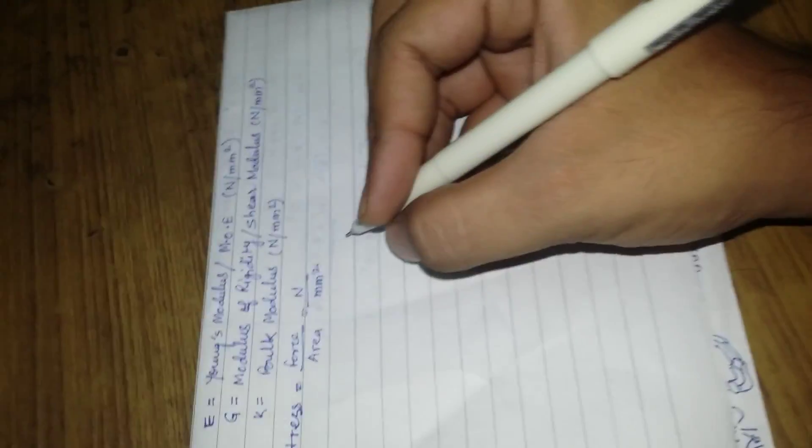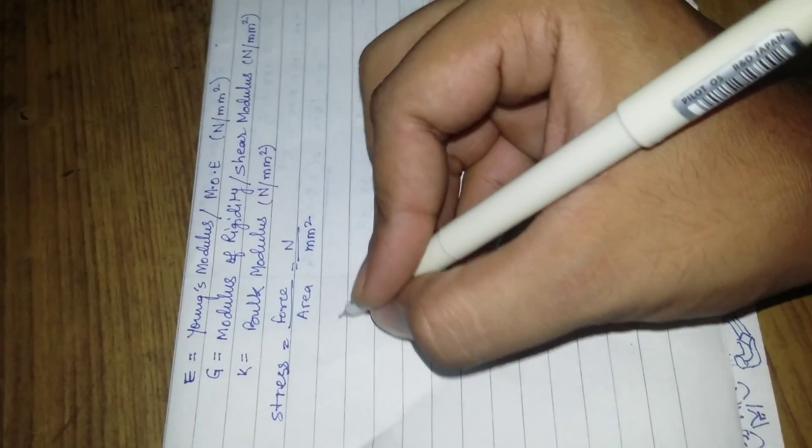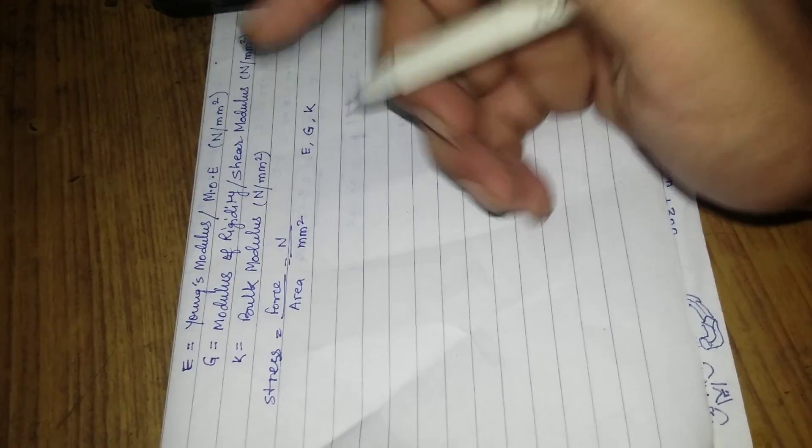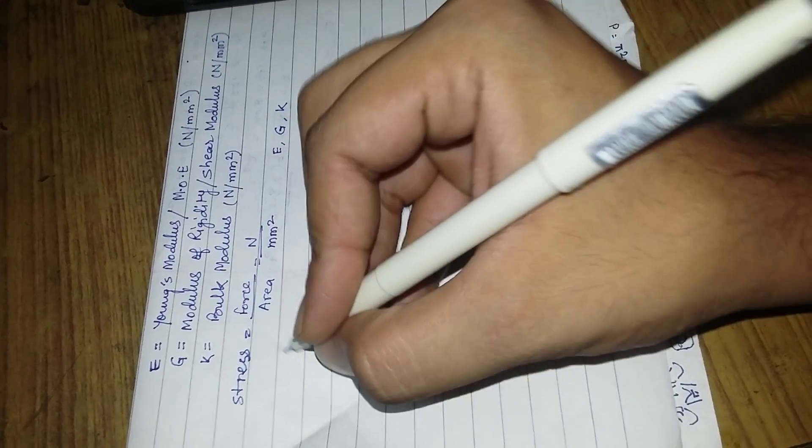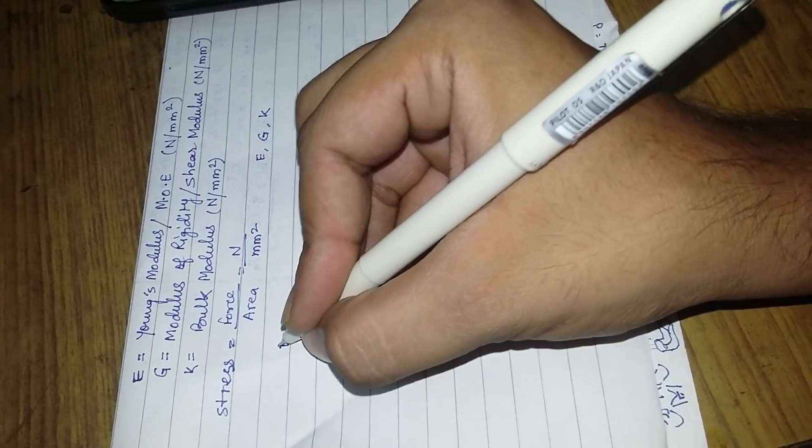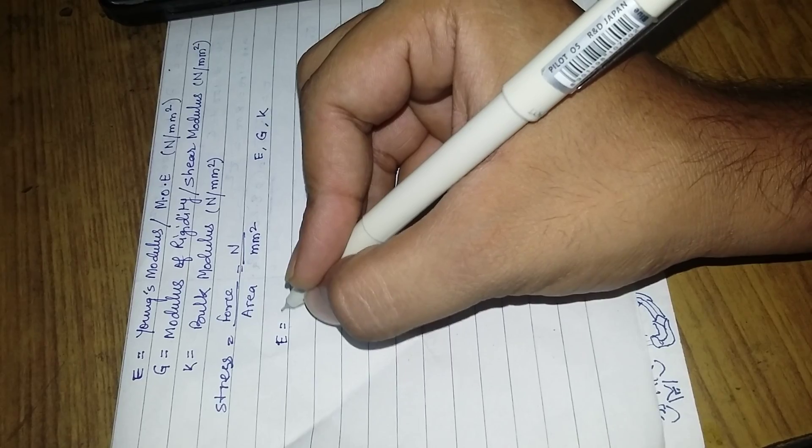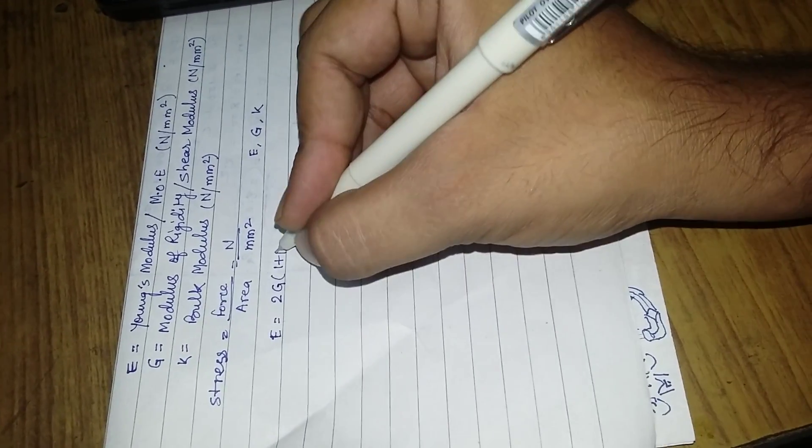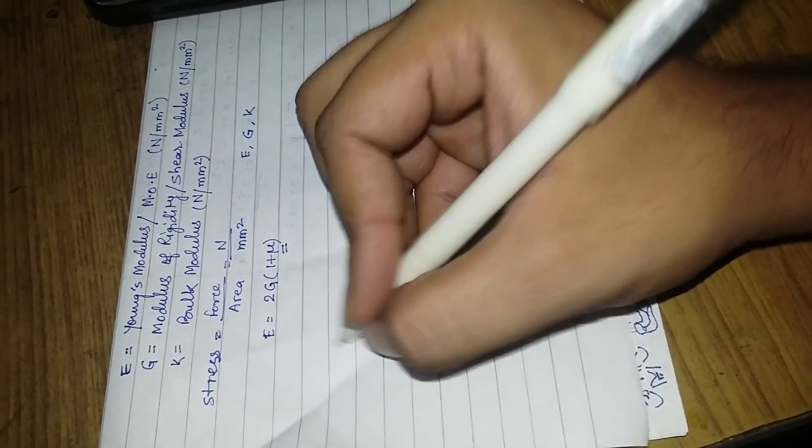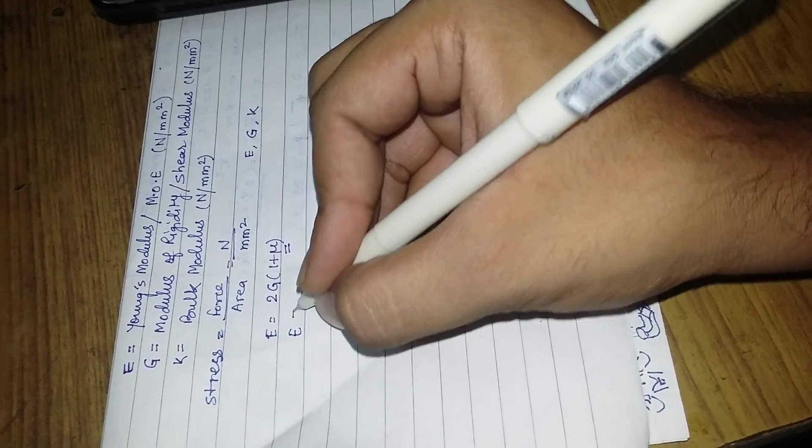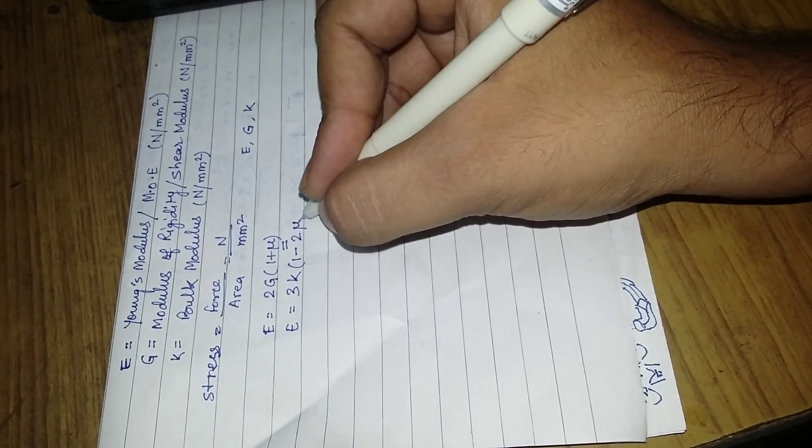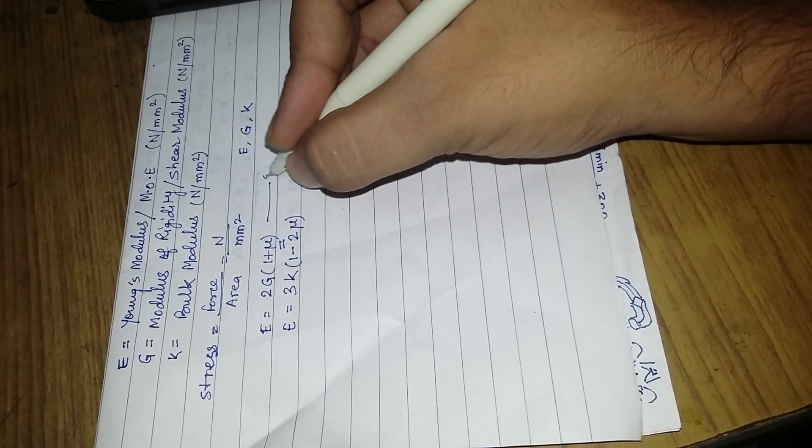Now the purpose of this video is to tell you how to derive the relationship between the three constants or moduli E, G, and K. We can write two equations: E equals 2G(1 plus μ), where μ is the Poisson's ratio, and E equals 3K(1 minus 2μ). These are relation number 1 and 2.